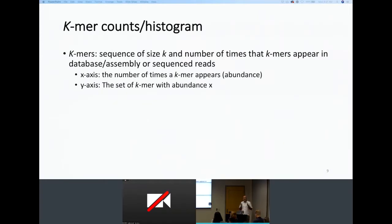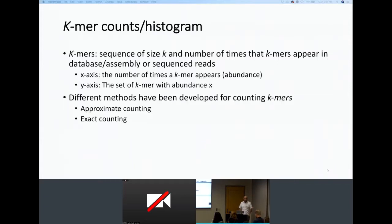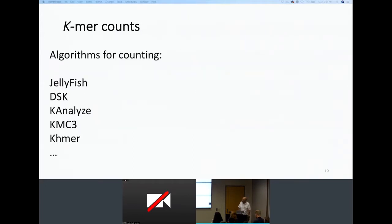What's good about k-mers is that we can count them. When we have whole genome sequence data or whole transcriptome data, we can count the number of times a particular k-mer appears. There are many tools to do this counting. We can then build a histogram where the x-axis is the k-mer abundance — the number of times the k-mer appears — and the y-axis is the number of k-mers with that particular abundance. Different methods provide approximate or exact counts.